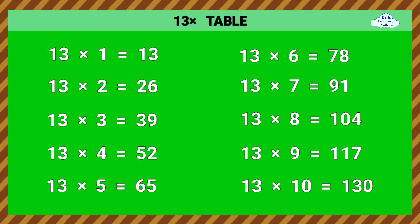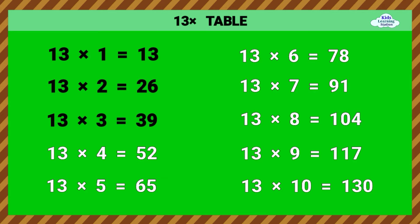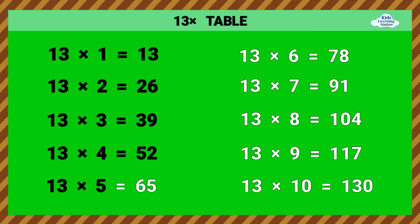13 times table. 13 times 3 equals 42. 13 times 1 equals 13. 13 times 2 equals 26. 13 times 3 equals 39. 13 times 4 equals 52. 13 times 5 equals 65.